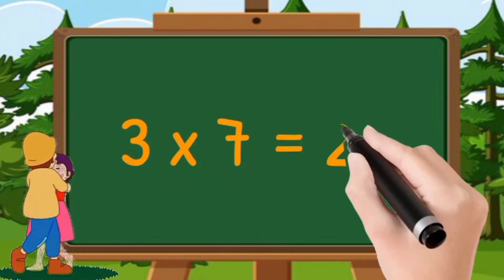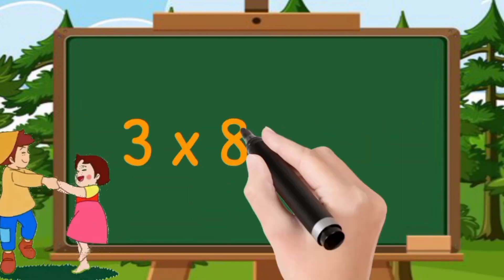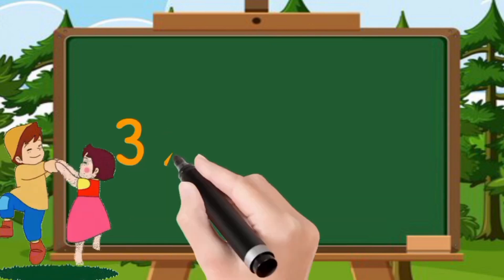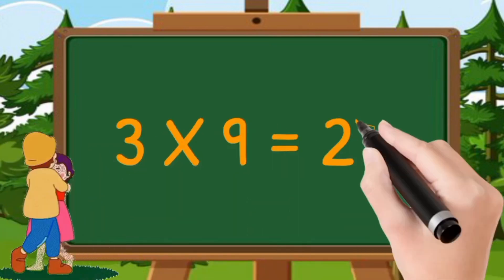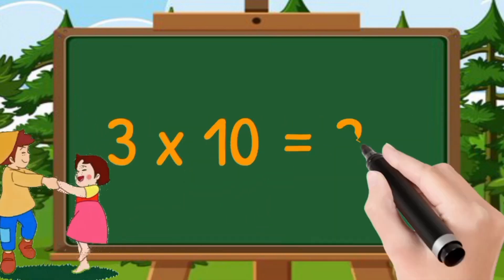Three sevens are twenty-one. Three eights are twenty-four. Three nines are twenty-seven. Three tens are thirty.